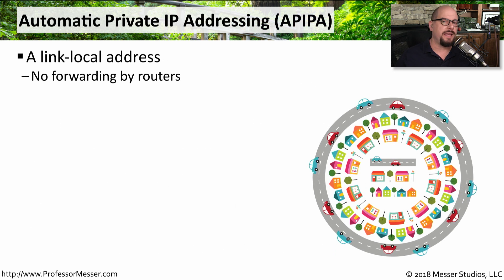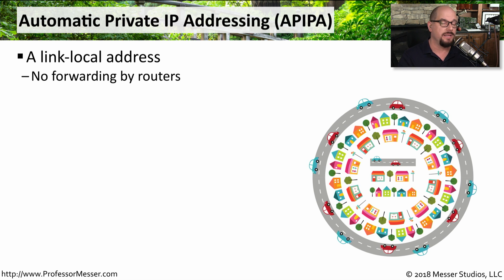An interesting thing happens if you've configured a workstation for DHCP and no DHCP server is available. Although you might think the workstation would not be able to communicate on the network without an IP address, there is a type of IP address that allows the workstation to at least communicate to local devices. We call this a link-local address, and although the device would not be able to communicate through a router, it can still communicate to all other devices on its local IP subnet.